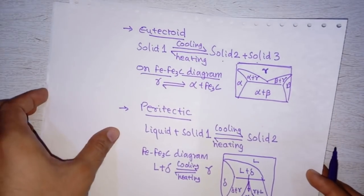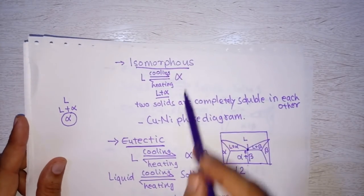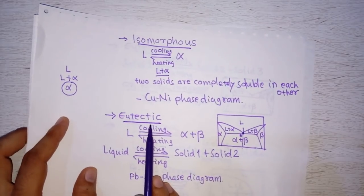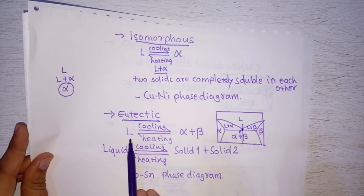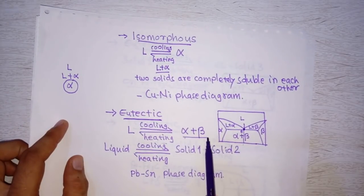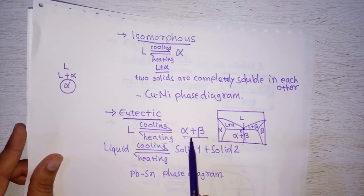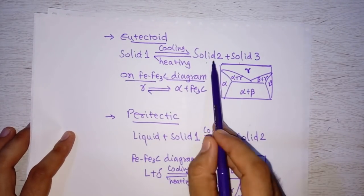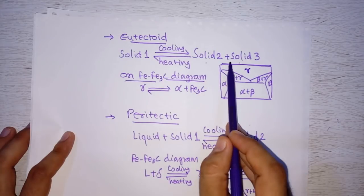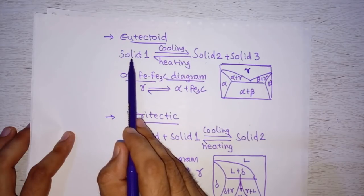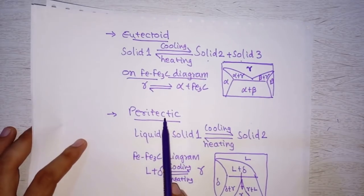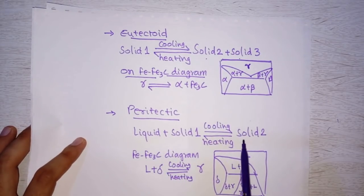So these are the different reactions we can observe on phase diagrams: isomorphous, where two solids are completely soluble in each other; eutectic, where we can get solid directly from liquid without passing through a liquid plus solid region and where we have two solids alpha plus beta (two metals not completely soluble in each other); eutectoid, where again two metals are not completely soluble but at high temperature we get solid 1 and on cooling two different solids; and peritectic, where liquid plus solid 1 gives us solid 2.